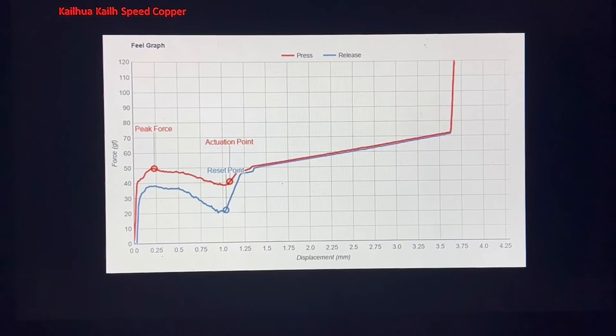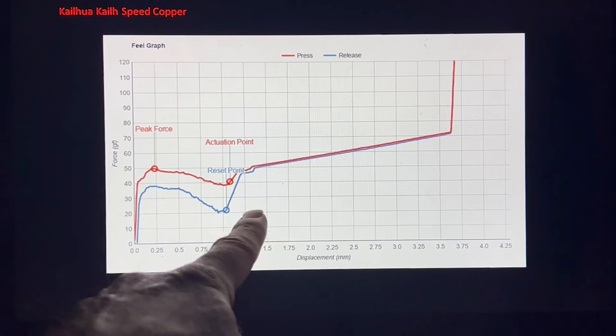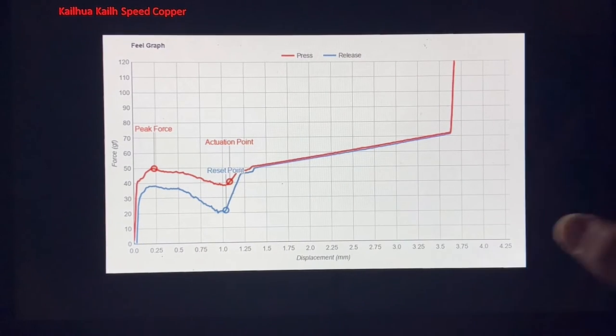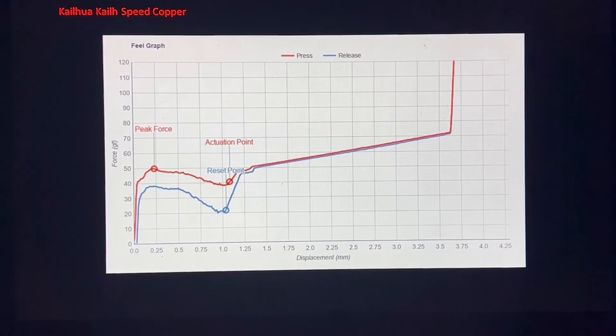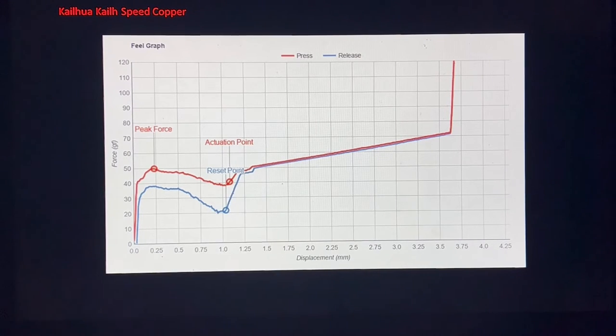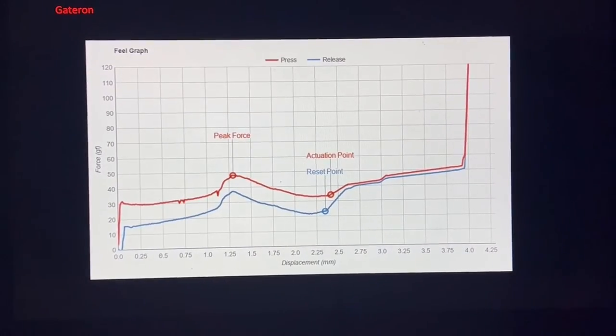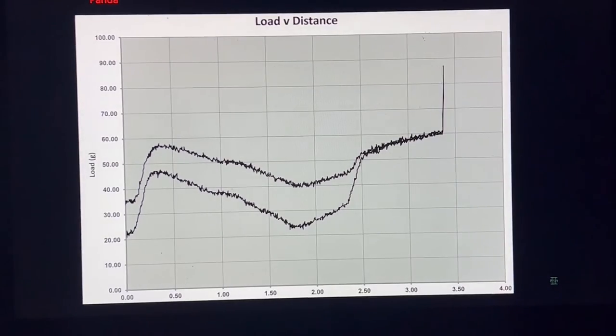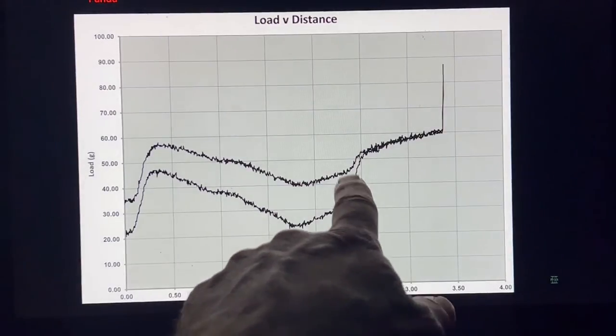And then last, but not least, is the Speed Copper. It basically requires a whole lot of force right up front. Drops down, and then has a long linear section in the back. So that's where you've actually actuated it, and then the rest is just extra travel. So in theory you could just have basically press right away and then let go and reset it back to zero. While the other Browns require a lot more actuation.